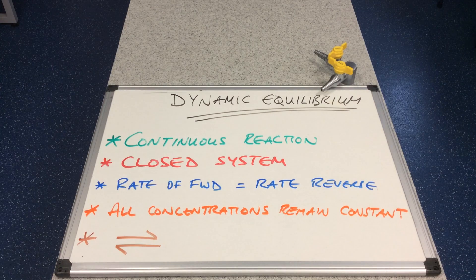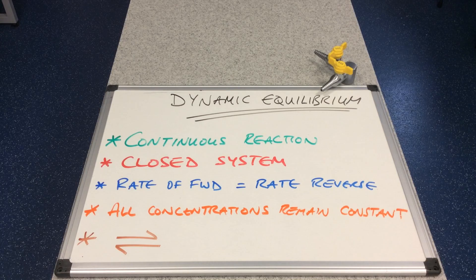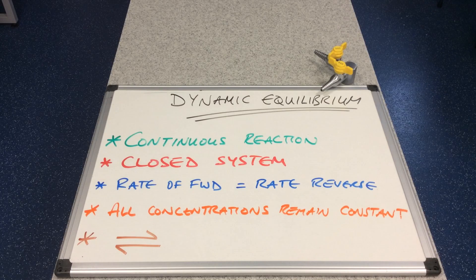What we're going to look at in this video is what happens to a dynamic equilibrium when you change a condition about it. You could change the concentration of one of the substances in the equation, you could change the temperature of the system, if you've got gases you could change the pressure of the system, and you could also add a catalyst. Any of those factors will do something to the position of the equilibrium.